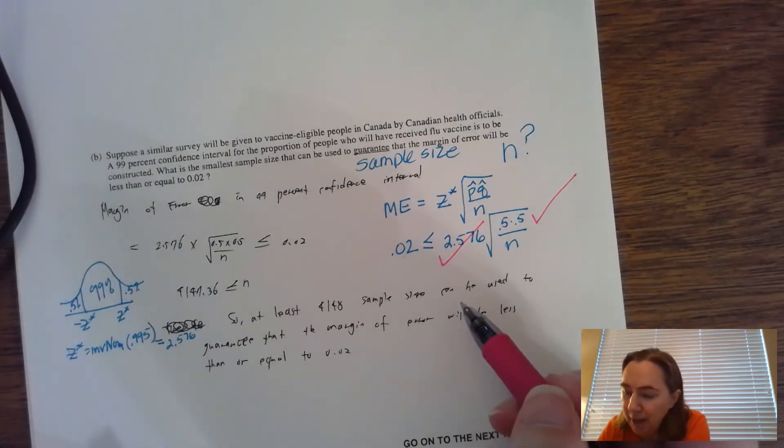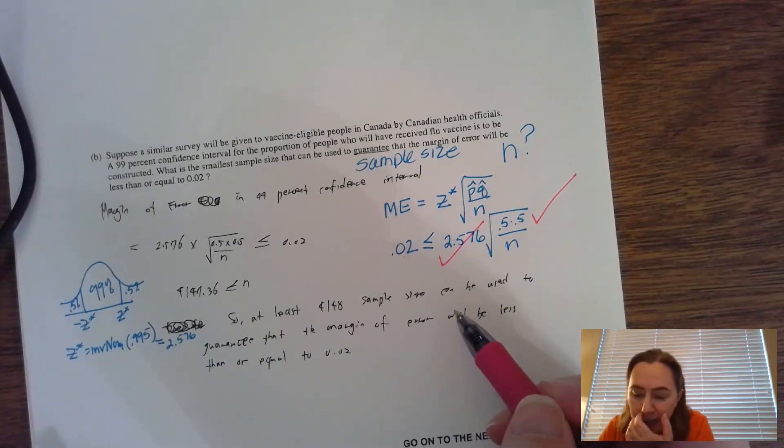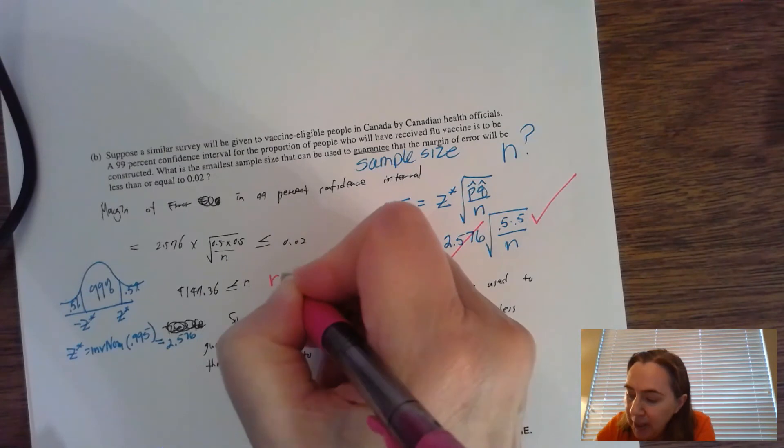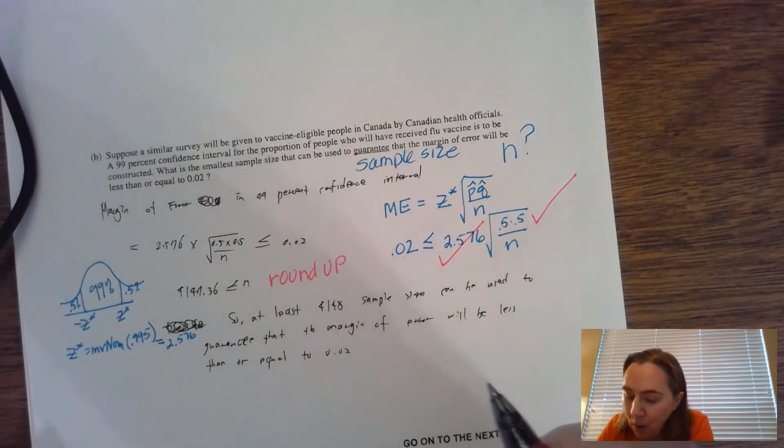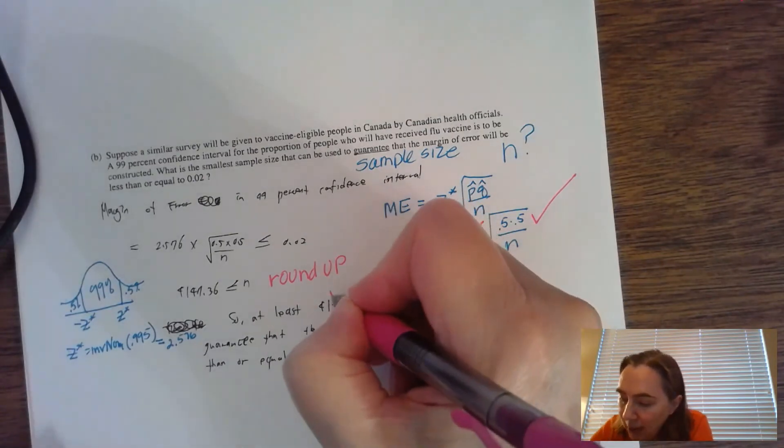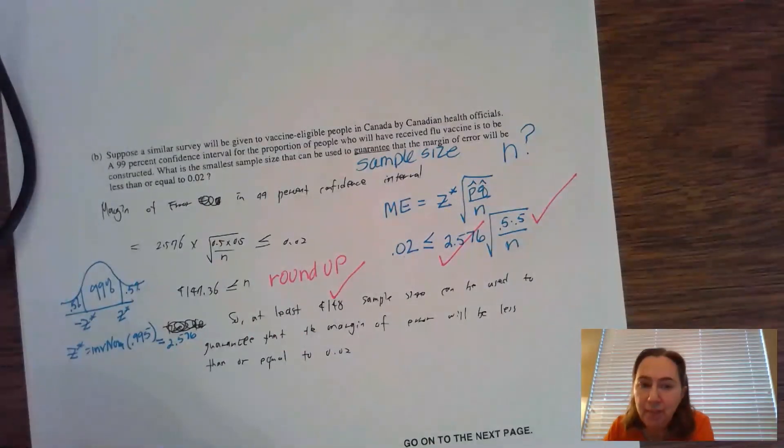Using your calculator and algebra magic, you're going to find out that n is equal to 4,147 point something. Doesn't matter what the something is—what you're always going to do on sample size is round up. Our answer is going to be 4,148. If you got that answer, give yourself a check. If you didn't round up, don't give yourself a check.